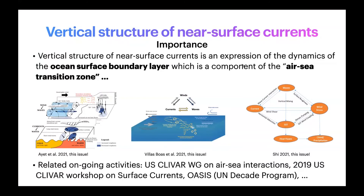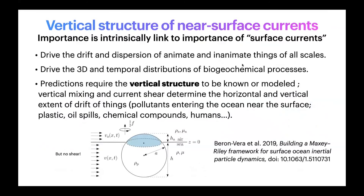The ocean surface boundary layer is itself a component of what people have come to call the air-sea transition zone, which includes not only the ocean boundary layer but also the atmospheric boundary layer, as well as the moving interface between the two. There is currently a US CLIVAR working group on air-sea interactions. In 2019, CLIVAR hosted a workshop on surface currents, and we can also think of the Ocean Observing Strategy for Air-Sea Interaction, or OASIS, which is right now a UN Decade program.